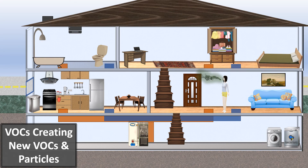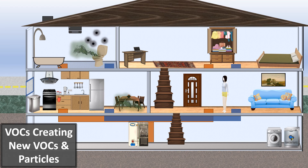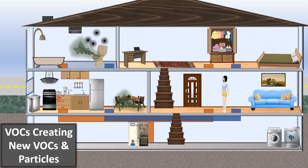VOC creating new VOC and particles. In this animation, exhaled VOCs fly around and have chemical reactions with surfaces to create even more VOCs, and those new VOCs can fly around and create new particles. This is why it's very important to filtrate VOCs — to prevent more VOCs from being created and new particles from being generated.